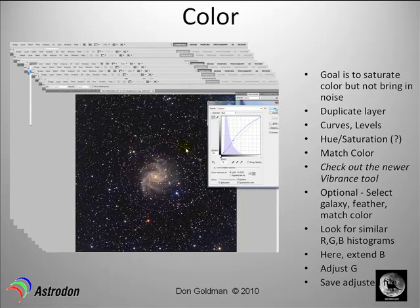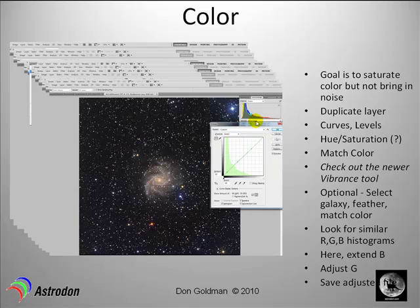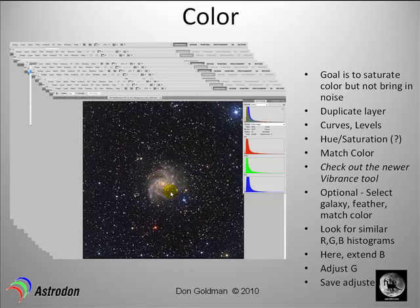With the galaxy still circled and feathered, we go into curves, select blue, and bring it up to an amount that will shift that blue histogram over to match the red and the green. When done, we can also make a slight adjustment in the green, push it up a little bit. You get three histograms that pretty well overlay one another and are matched. You see a little bit more blue-magenta color in the spiral arms, as expected, and we're pretty well done with our color enhancement and color balancing.